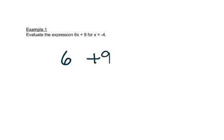In this problem we have 6x plus 9, and we want to know what that is if x is negative 4. To do that, we copy the 6 plus 9, and since x is negative 4, in place of x we're going to put negative 4. Any time I'm replacing a letter with a number, I put it in parentheses.